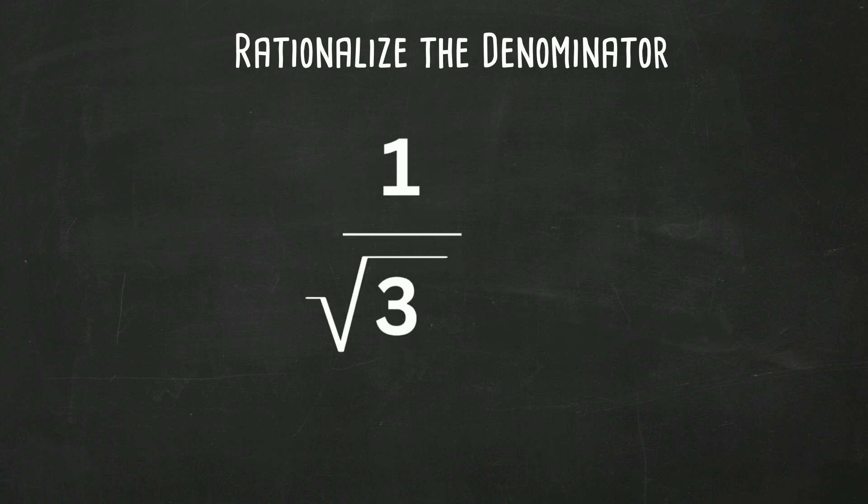We have this fraction, 1 over the square root of 3. Square root of 3, since it is not a perfect square, is irrational, and we want to convert it to a rational number.